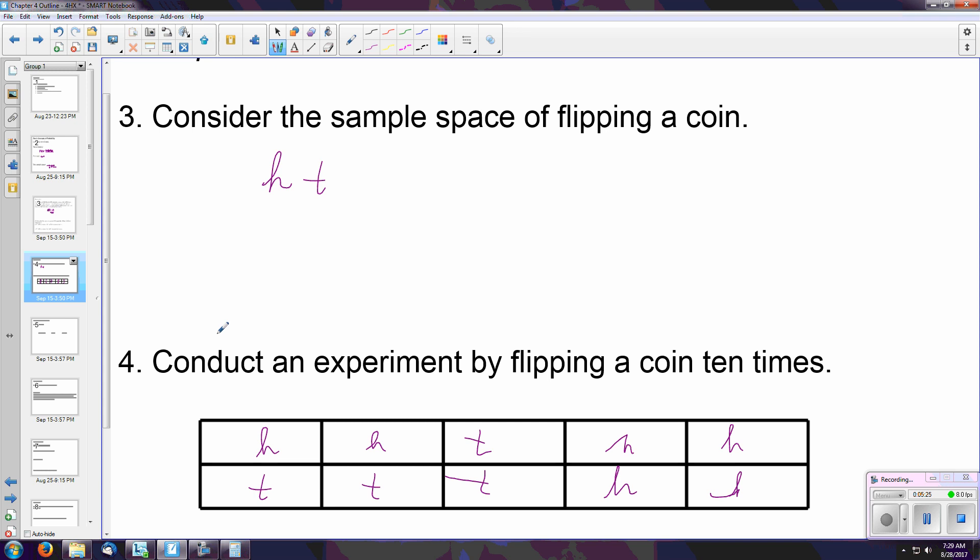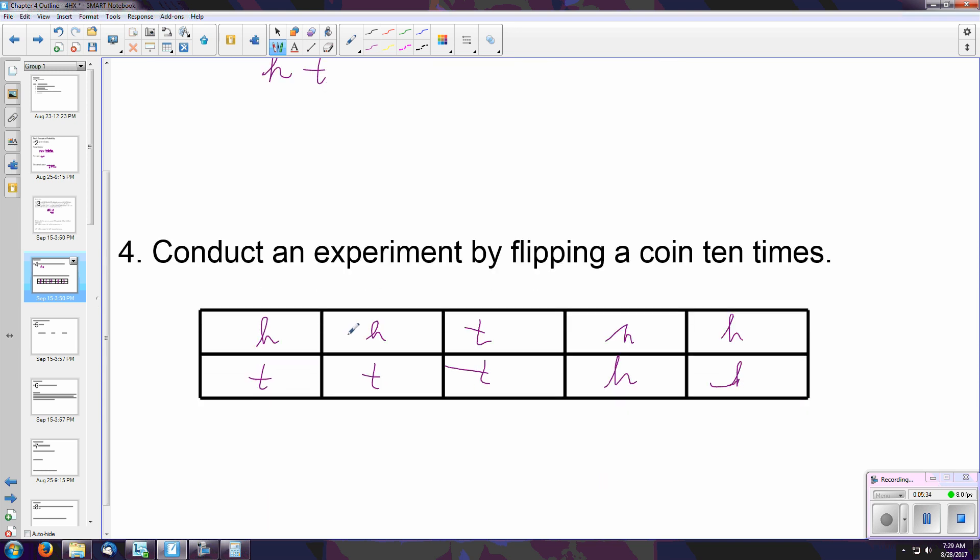So in theory, 50% of the time the coin should land on heads, 50% of the time it should land on tails. But in practice, that may not necessarily be what happens.